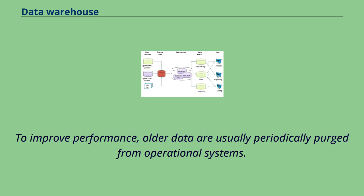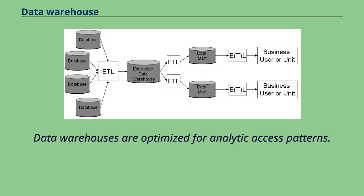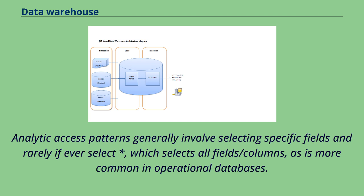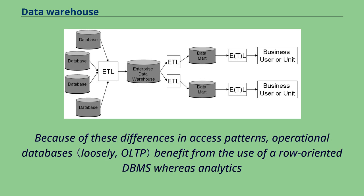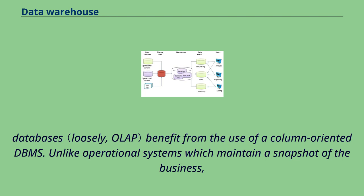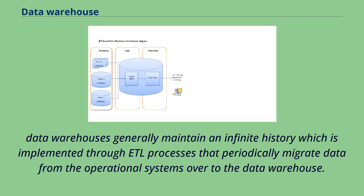Fully normalized database designs often result in information from a business transaction being stored in dozens to hundreds of tables. To improve performance, older data are usually periodically purged from operational systems. Data warehouses are optimized for analytic access patterns, which generally involve selecting specific fields. Because of these differences in access patterns, operational databases benefit from row-oriented DBMS whereas analytics databases benefit from column-oriented DBMS. Unlike operational systems which maintain a snapshot of the business, data warehouses generally maintain an infinite history implemented through ETL processes that periodically migrate data from the operational systems to the data warehouse.